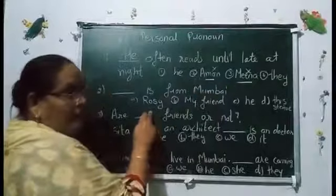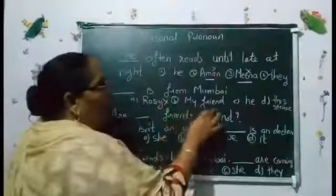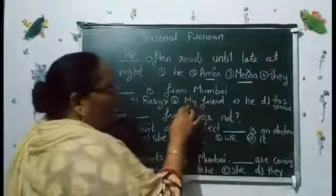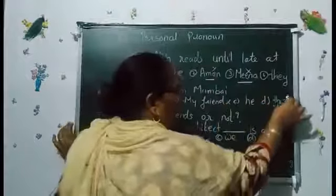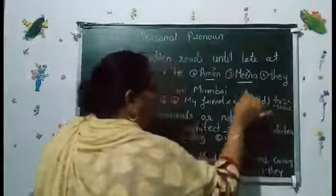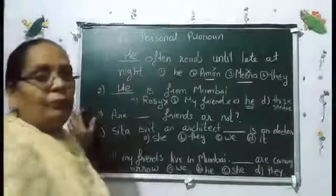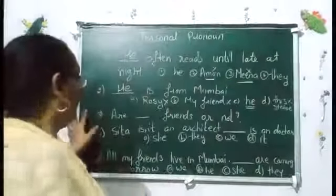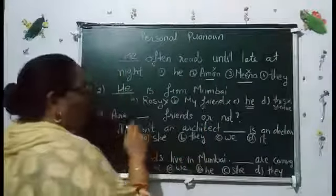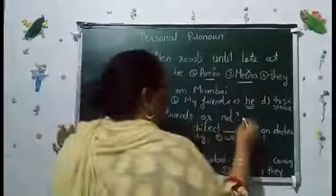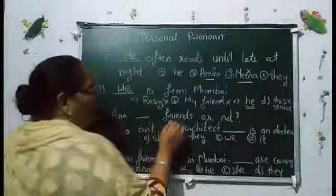Next sentence: 'Rosie is from Mumbai' — Rosie is a noun, a proper noun. My friend — we need to choose the right pronoun. We have options: he, we, they, us. He is from Mumbai.